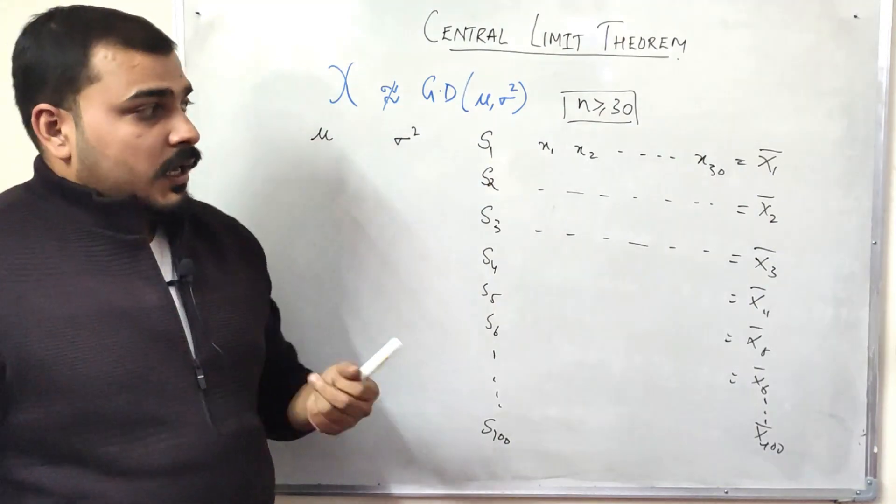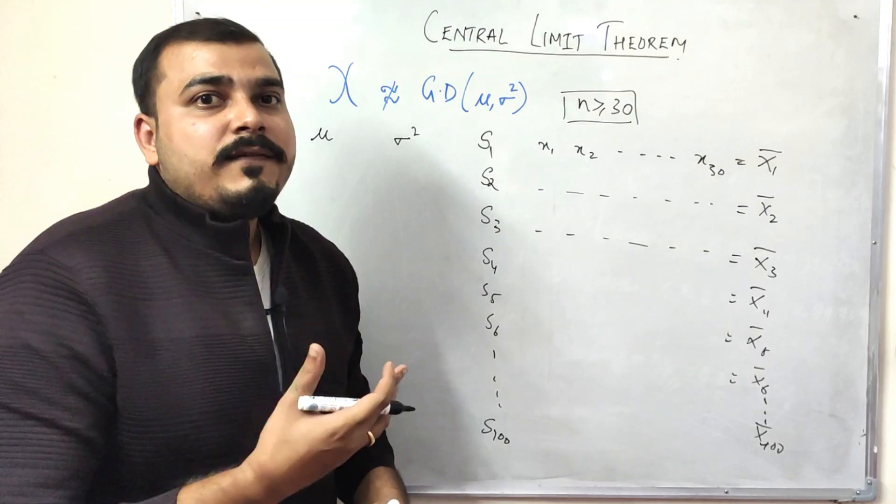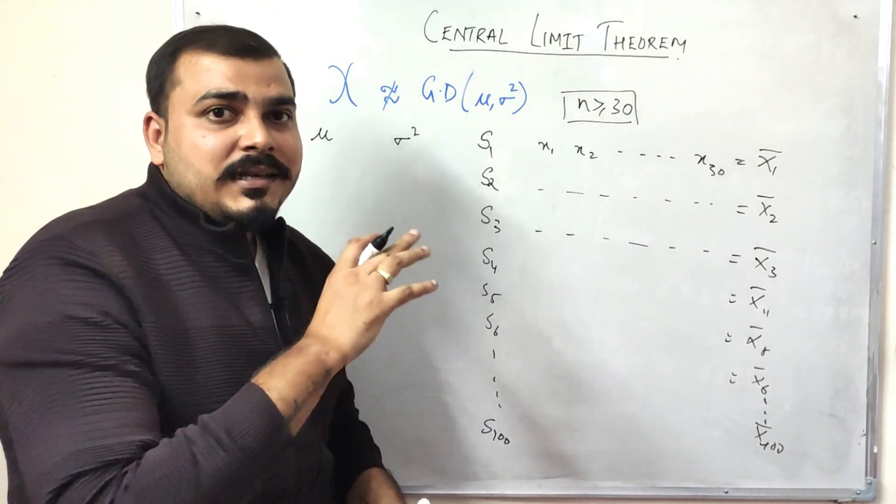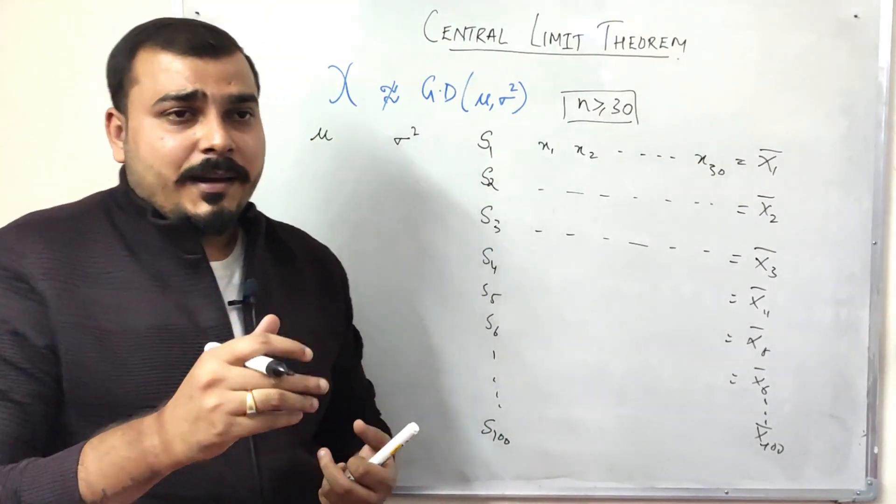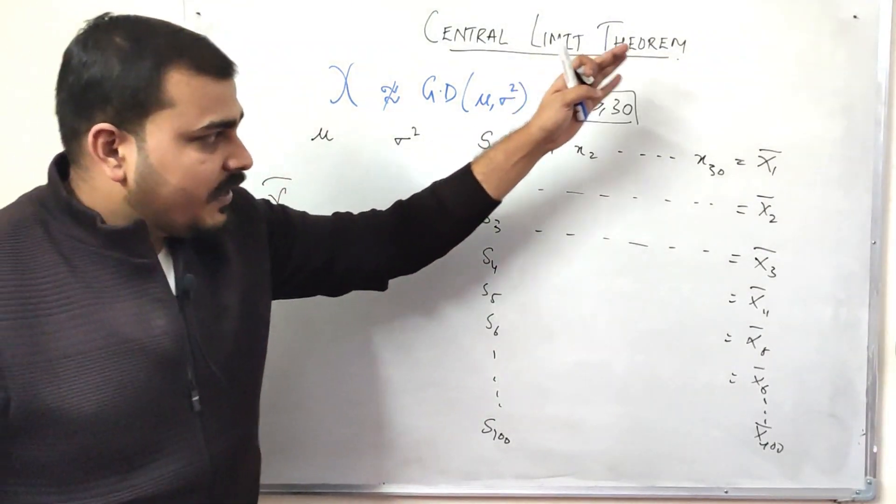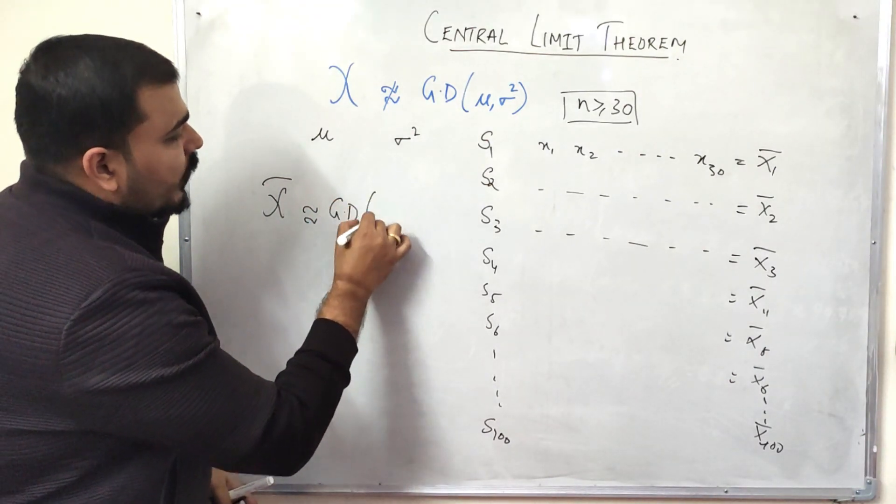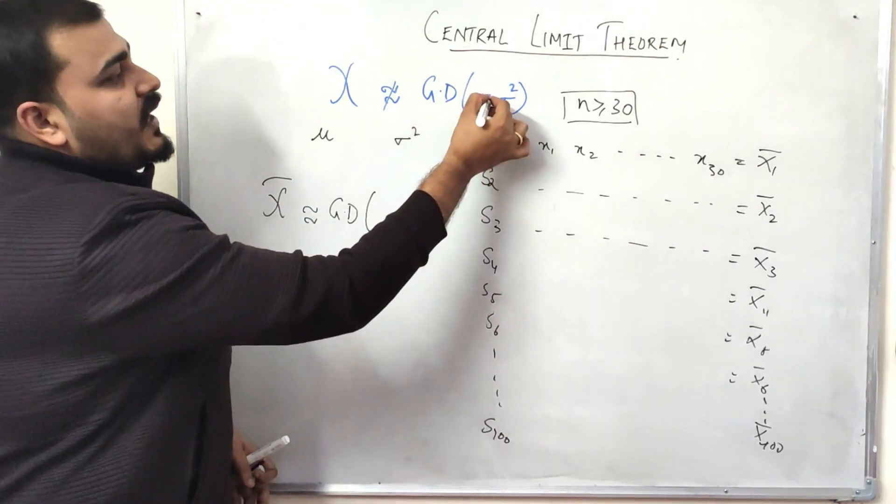The mean will be equal to this mean. So if I'm taking this sample and considering x̄ is my mean, this will approximately be equal to μ, which is my population mean. So this condition will be satisfied by this particular sample mean.